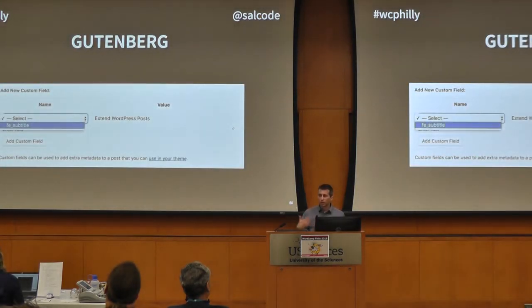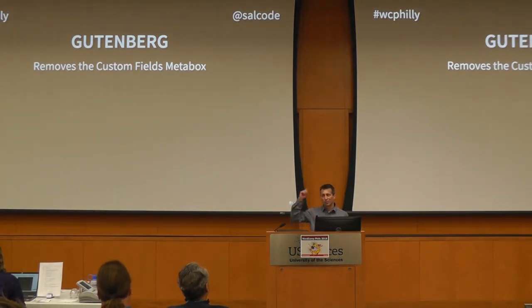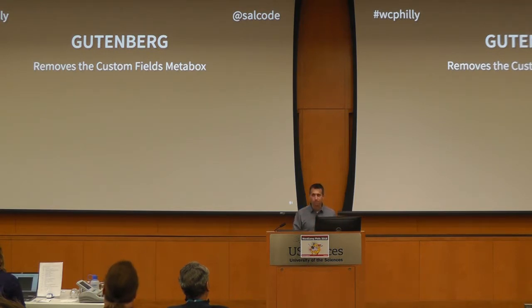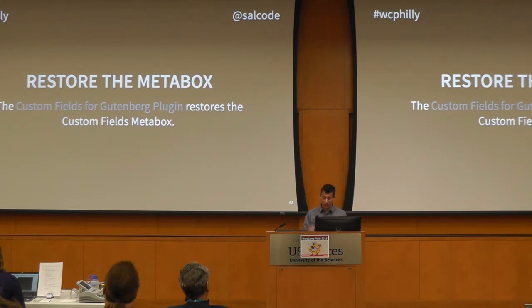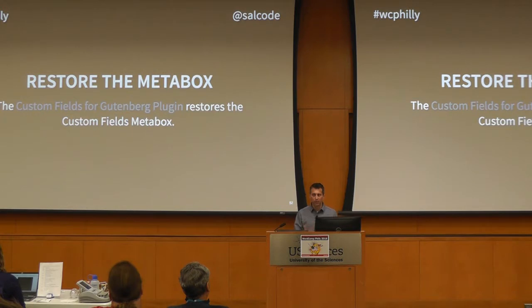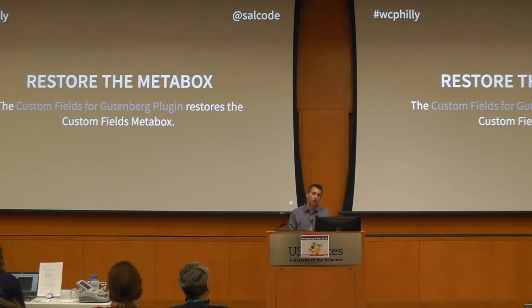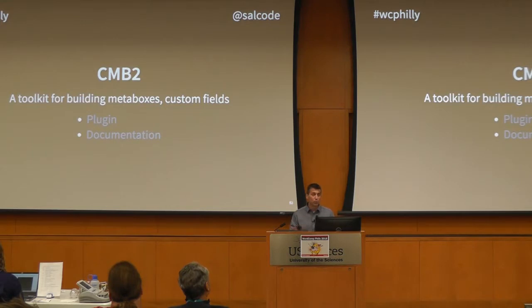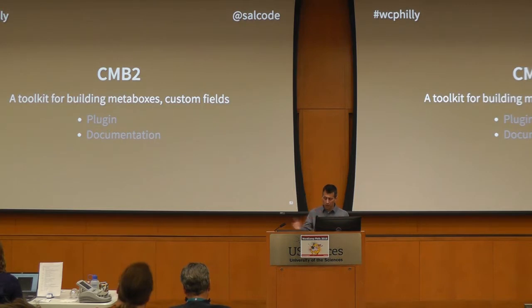Gutenberg is coming. One of the things that happens with Gutenberg is the custom fields meta box is going away — you can't go up and pull the checkbox and have that pop up. That sounds like a bad thing, but it really isn't, for a couple of reasons. First, you can get it back: there's a plugin called the Custom Fields Gutenberg plugin — run that plugin and you'll get that same box on your Gutenberg site. But the real reason it's not bad news is that box we've been working in isn't really the best user experience. I wouldn't want to tell a client to scroll down to the bottom and type in 'fe_subtitle' to put in a subtitle.